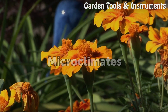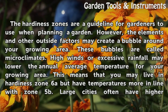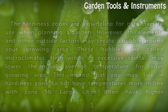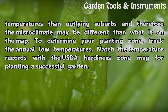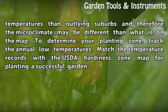Microclimates. The hardiness zones are a guideline for gardeners to use when planting a garden. However, the elements and other outside factors may create a bubble around your growing area. These bubbles are called microclimates. High winds or excessive rainfall may lower the annual average temperature for your growing area, meaning you may live in hardiness Zone 6A but have temperatures more in line with Zone 5B. Large cities often have higher temperatures than outlying suburbs, so the microclimate may differ from what is on the map. To determine your planting zone, track the annual low temperatures and match them with the USDA hardiness zone map for planting a successful garden.